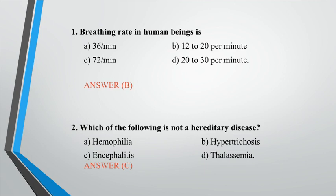Question 2: Which of the following is not a hereditary disease? A. Haemophilia, B. Hypertrichosis, C. Encephalitis, D. Thalassemia. Answer: C.